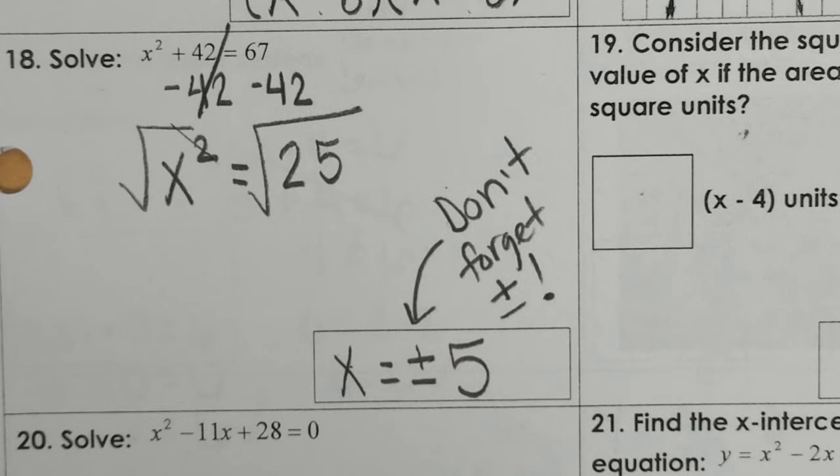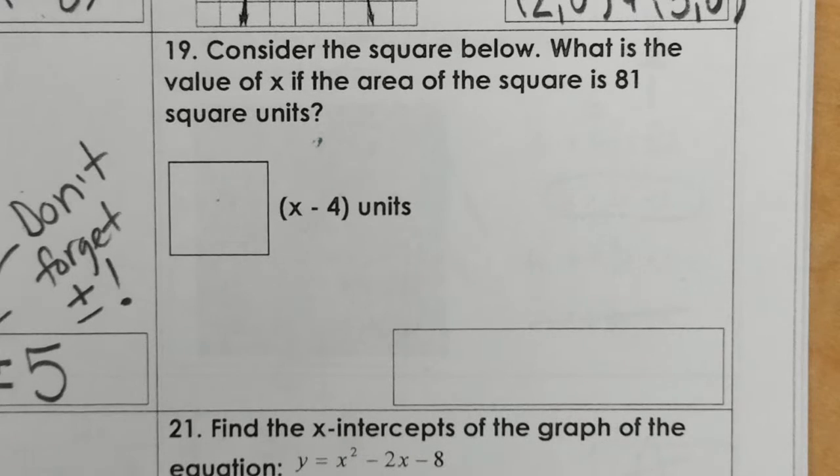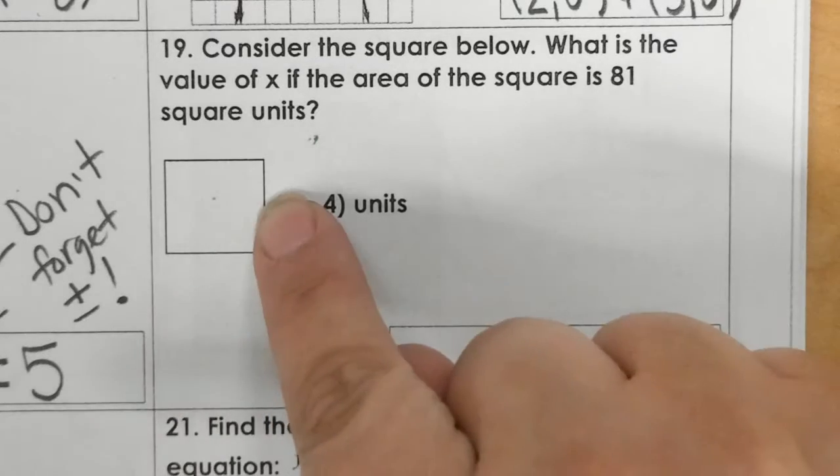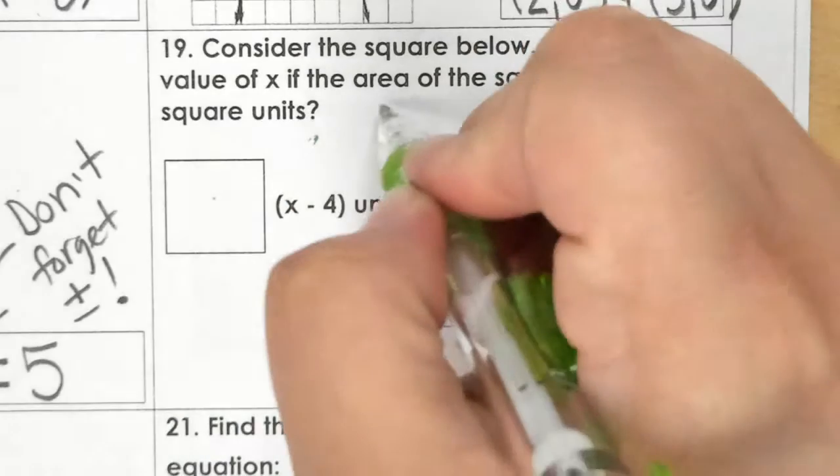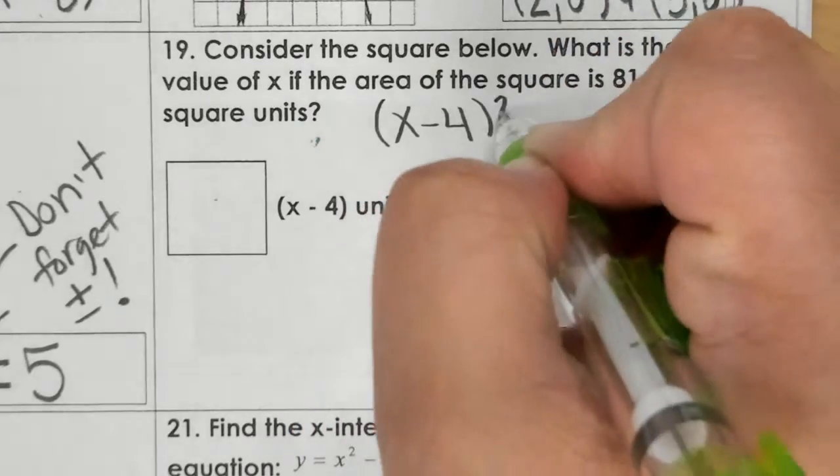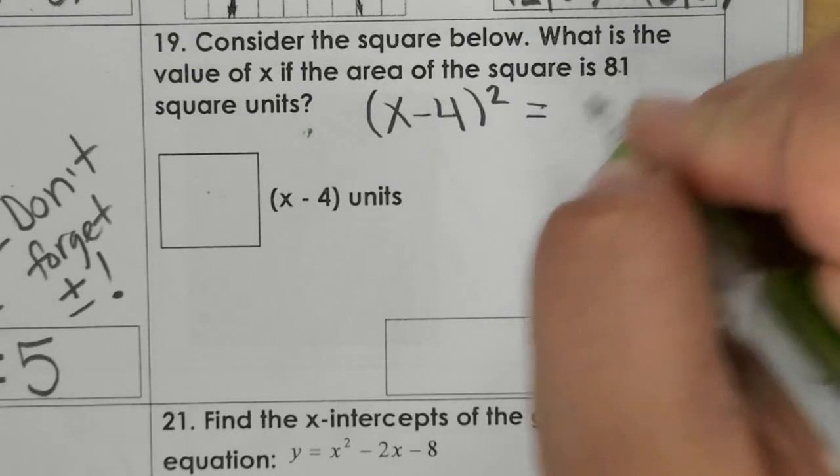For number 19, we have to set up the equation first. It says consider the square below. What is the value of x if the area of the square is 81 square units? You have to think, how do you find the area of a square? You do side times side. That means you're doing this right here twice. So x minus 4 squared equals 81.